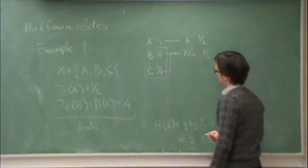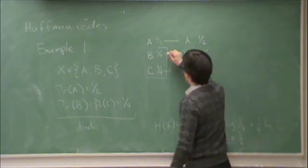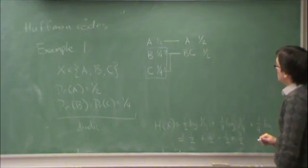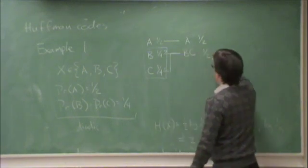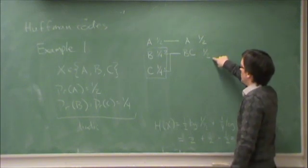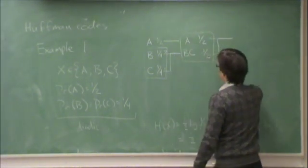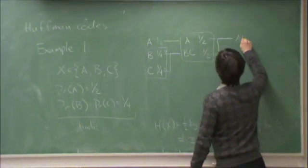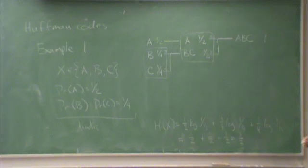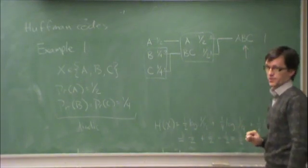We will also assign - since my output alphabet is binary - a zero to one of these elements and a one to the other. It doesn't matter in which order. Then we do the same thing. These are already sorted in decreasing order because they're both the same probability. I group these together and end up with the grouped source letter ABC with probability one. I assign this one a zero and this one a one. At the end, once I have a single grouped source letter left, I'm done.